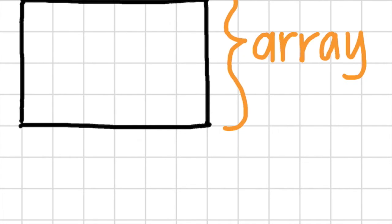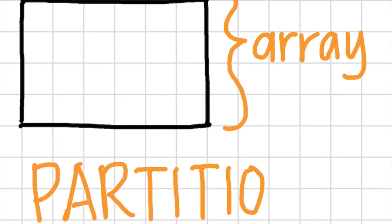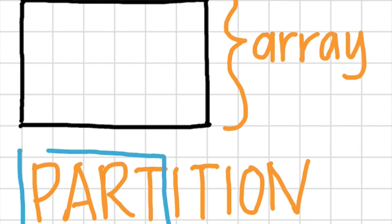So we can look at this array, and today we're going to learn about this word: partition. And so what we can see here is a little bit of the meaning. This is 'part.' So what we're going to do today is learn how to partition an array to make equal groups. And we're going to talk about halves, quarters, and thirds.